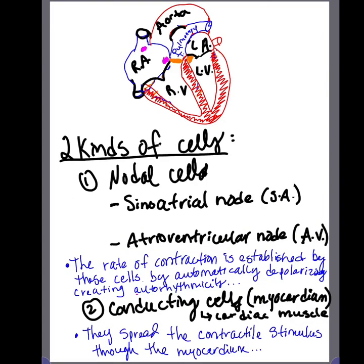There are two kinds of cells: nodal cells located in the sinoatrial node, or SA node, and the atrioventricular node, or AV node. The rate of contraction is established by these cells because they automatically depolarize, creating something called autorhythmicity, which means your heart can beat on its own.